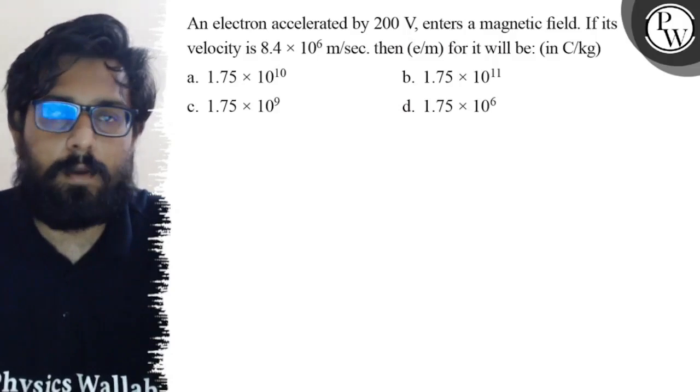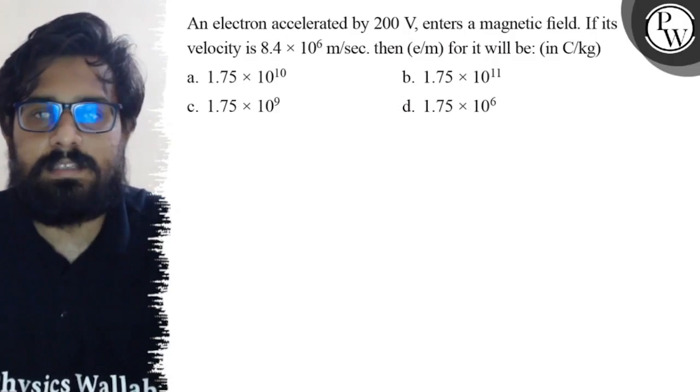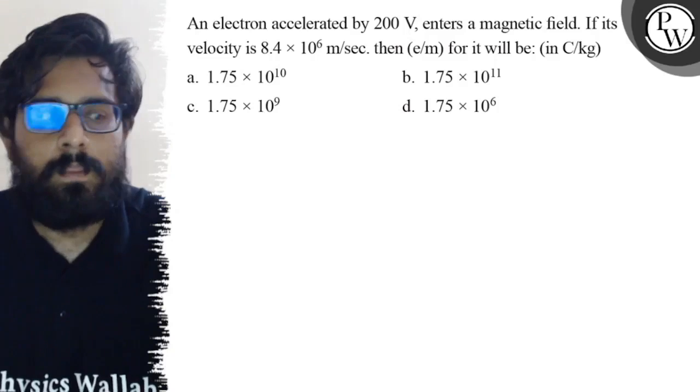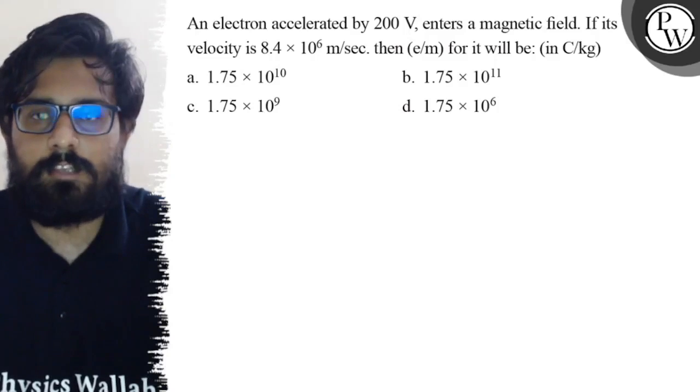Second option is 1.75 × 10¹¹. Third option is 1.75 × 10⁹, and your fourth option is 1.75 × 10⁶.